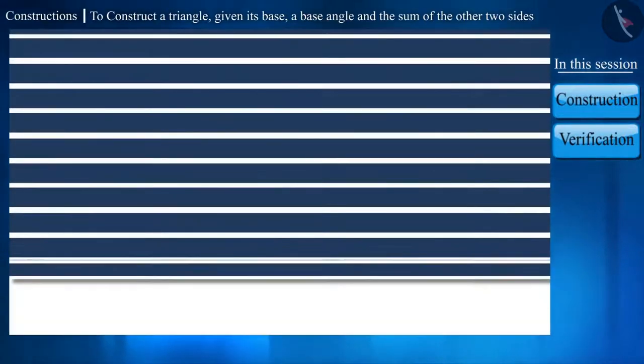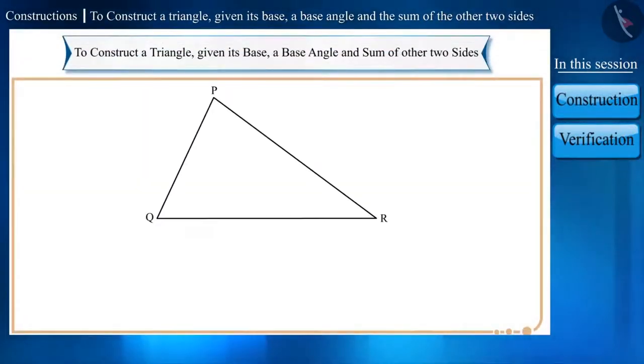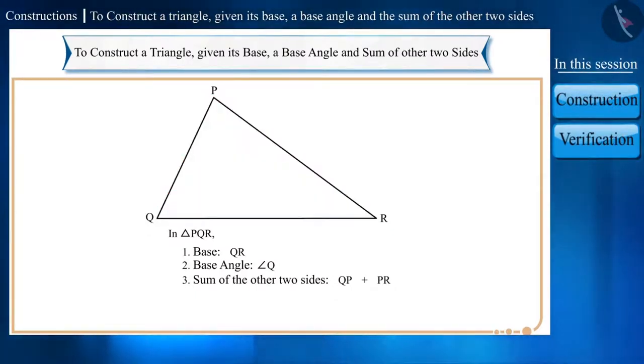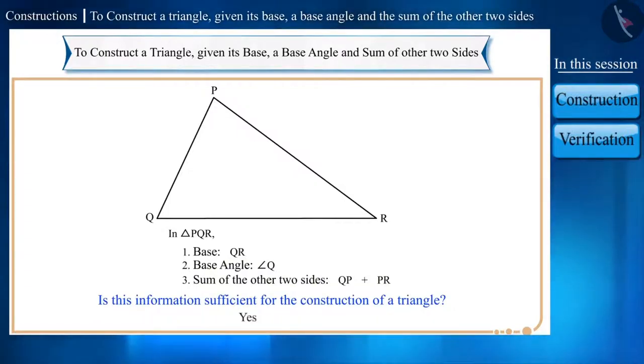So, as an example, let's construct a triangle PQR. Here, we are given the length of the base QR, the measure of the base angle, angle Q, and the sum of the other two sides. That is, QP plus PR. For the construction of a triangle, information of three parts is essential. Here, information of three parts of triangle is given. Think, is this information sufficient for the construction of a triangle? Yes, and the steps for the construction of such a triangle are as follows.